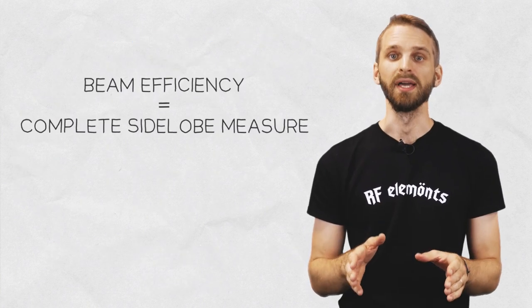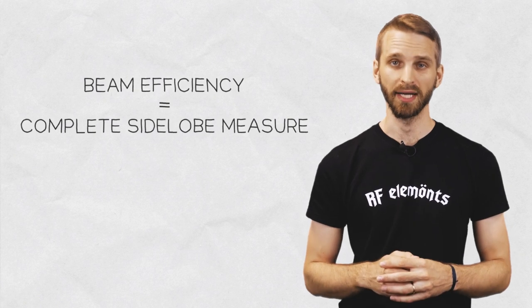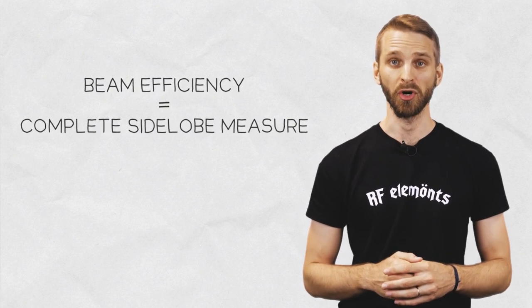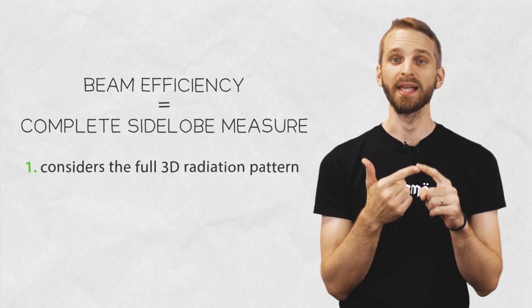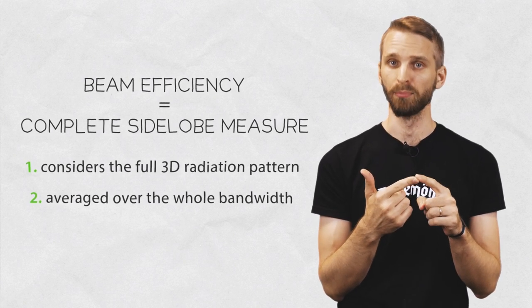Beam efficiency gives you complete information about the side lobes an antenna might have because, first, it considers the full 3D radiation pattern and second, it's averaged over the whole bandwidth of operation.